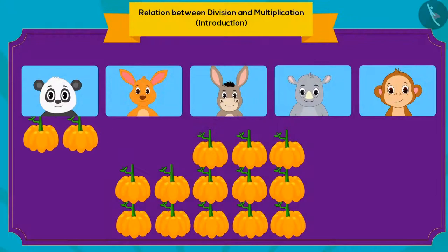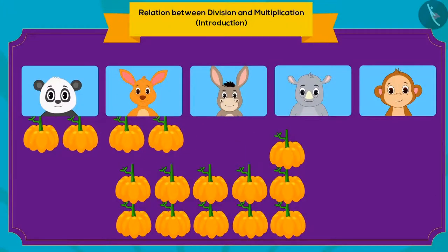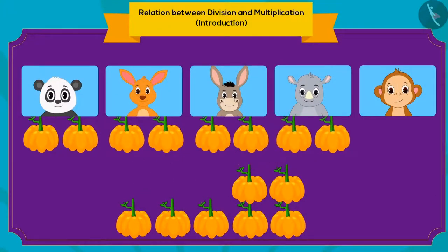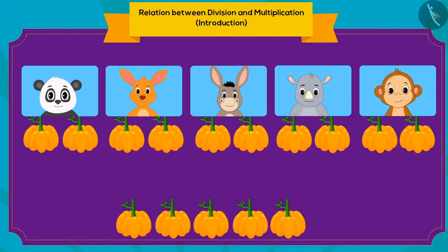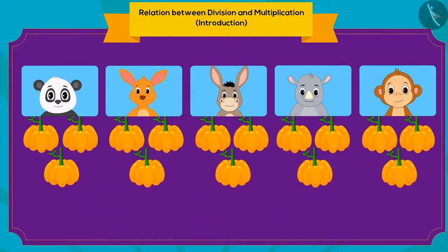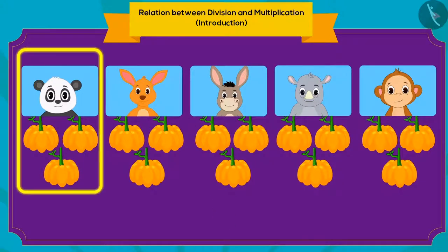Chanda first gave two pumpkins each to her five friends. Then she gave one more pumpkin to each. So, how many pumpkins will Chanda give to each friend? Three pumpkins.